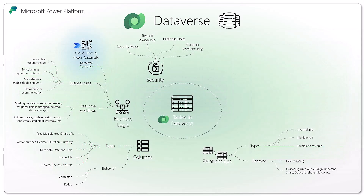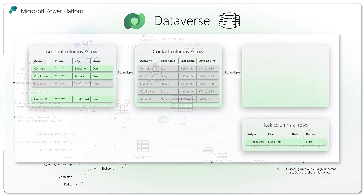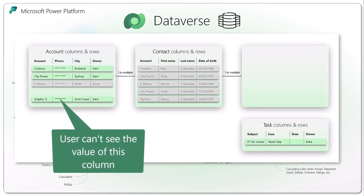There is also a concept of business units. If you have an organization with different teams and different structure, you can say that a specific set of records is visible within your business unit and your team, but users from another business unit cannot see or update the records of your business unit. You can also define column-level security, so for each column, you can specify who can see or update it.